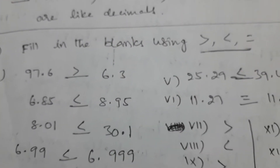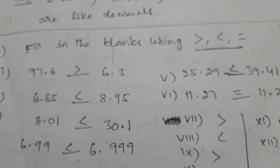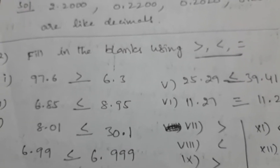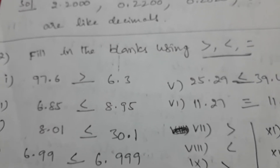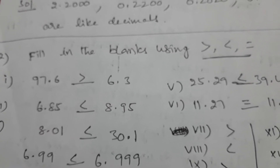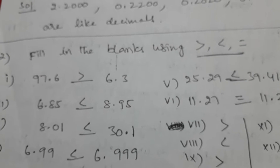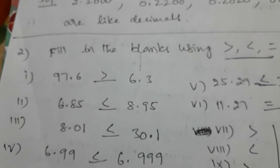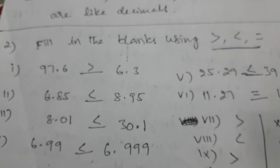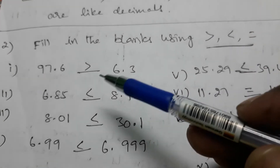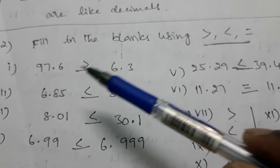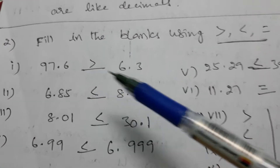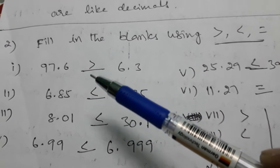Hi students, welcome to our mathematics class. In this class I am going to explain about comparison of decimal numbers. We will look at 97.6 and 6.3 — which is the greatest and which is the smallest?